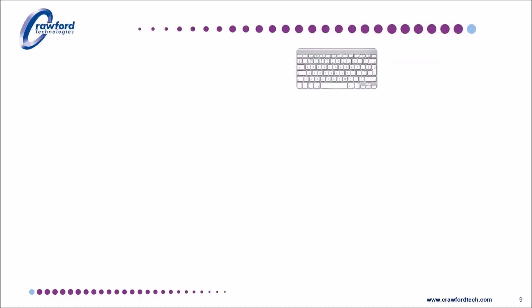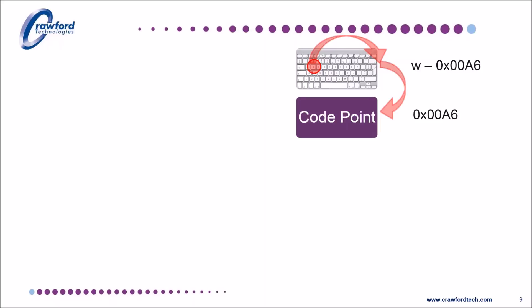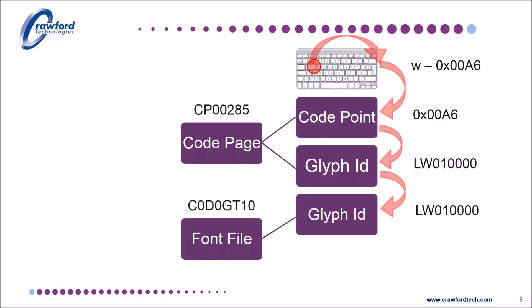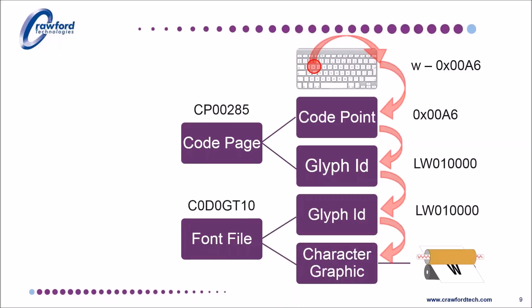By way of an example, we will consider interpreting and printing a character within AFP. The lowercase w, EBCDIC value 166 — remember this is an IBM world, so it's EBCDIC, not ASCII — has a code point value of hexadecimal A6. This value is looked up in a code page file to find the instructions for printing the character, its glyph ID. Using code page 285, for example, this maps A6 to the glyph identifier LW01000. This glyph identifier is then looked up in the font file and the character printing instructions retrieved. This could either be in raster — which is dots — or outline, which is splines format, depending upon the font being used, each with their own advantages and disadvantages.